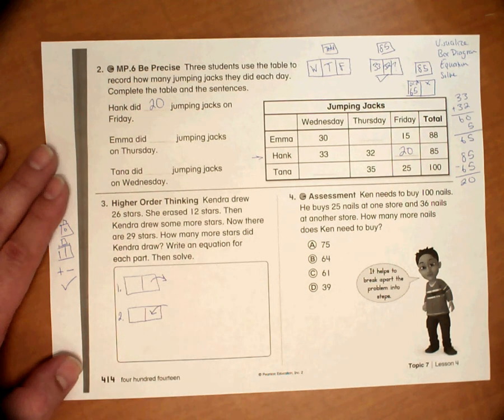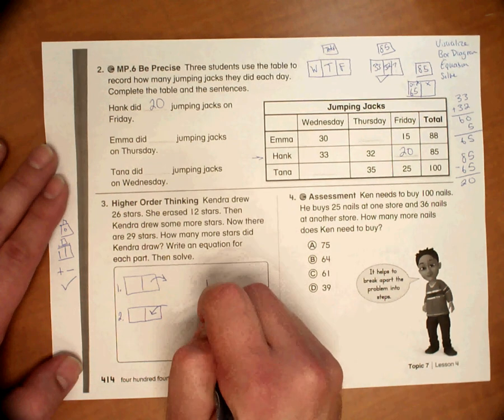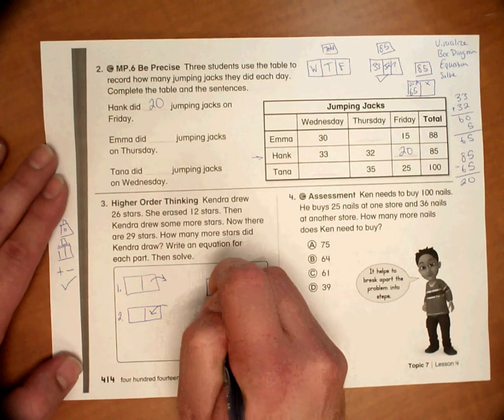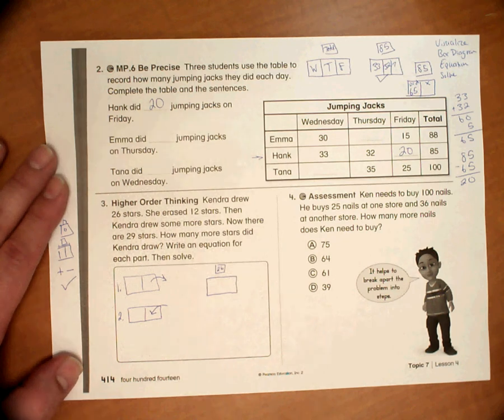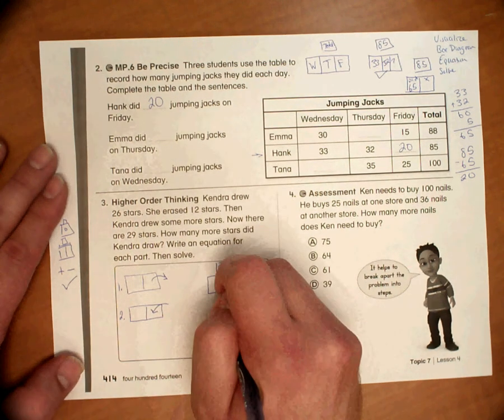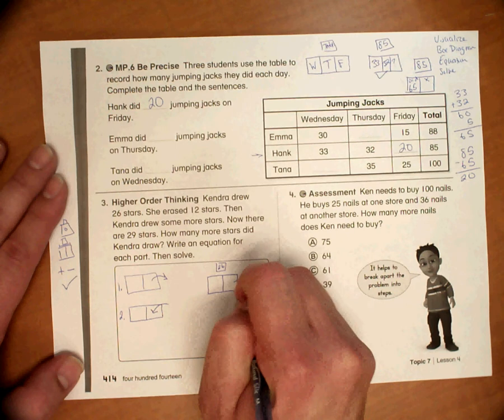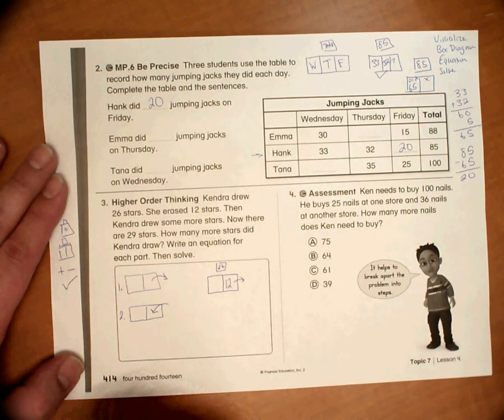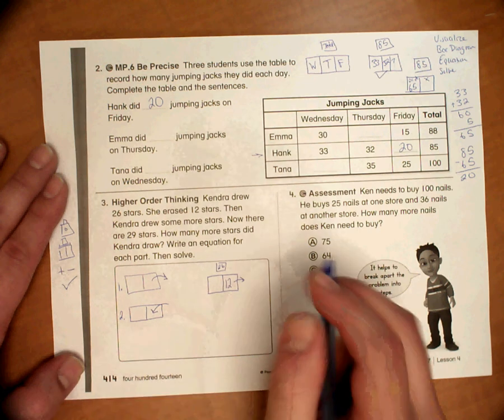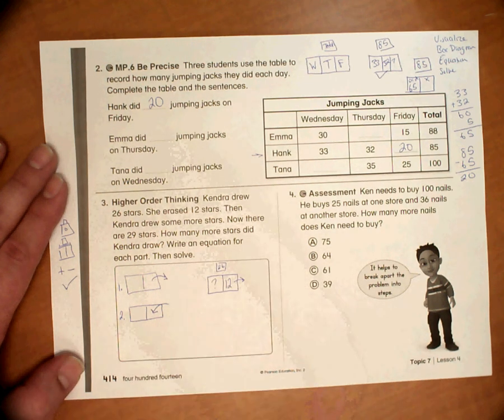This is step two. So she's going to erase some of them. And she's going to erase 12. We don't know how many stars are left. So that's our bar diagram.